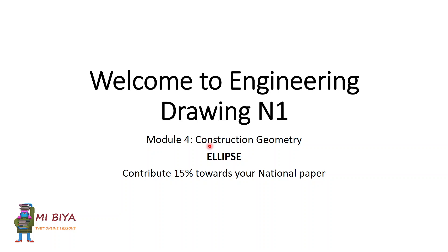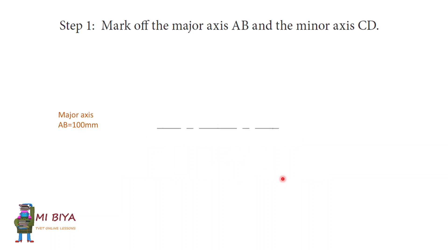Dear student, it's Mr. Bia here. Today we are going to cover Module 4, which is Construction Line. We are going to do a unit called Ellipse. This unit contributes 15% towards your National Paper. We are going to cover about eight steps to complete this unit.